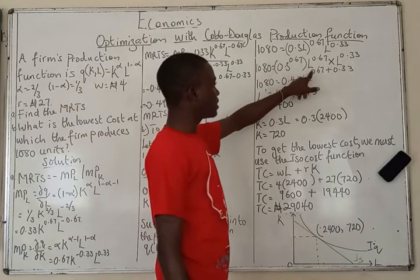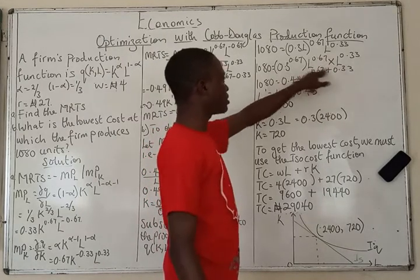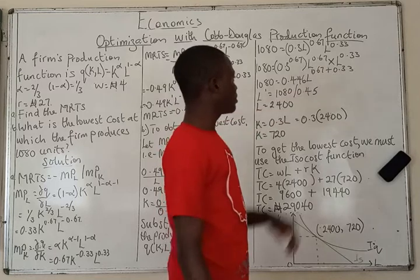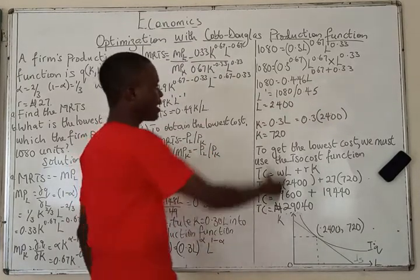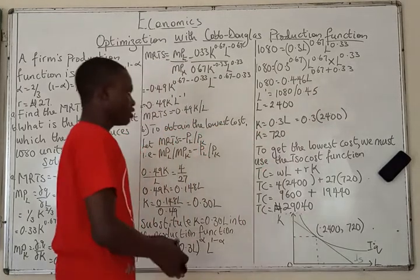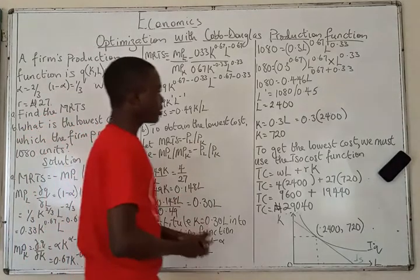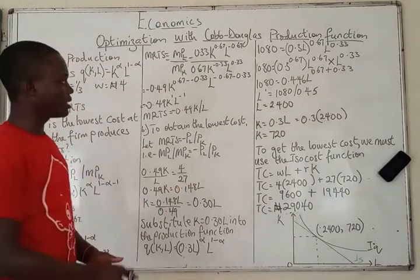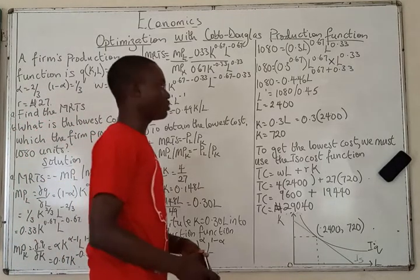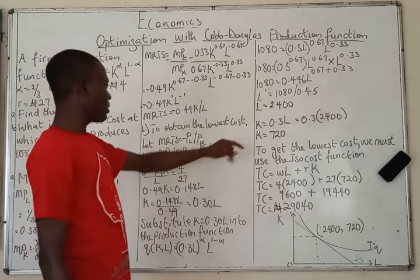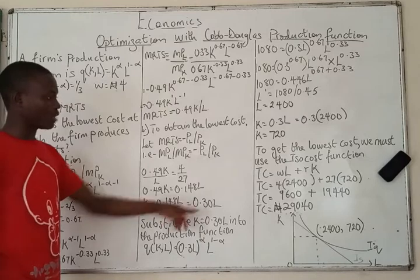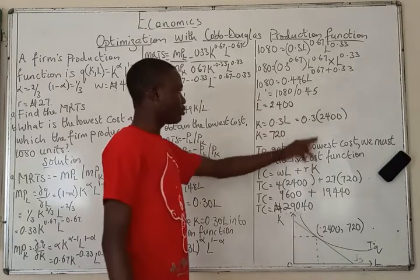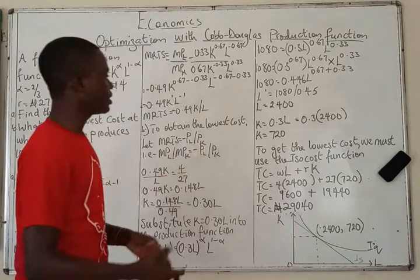Dividing 1,080 by 0.45 gives us L = 2,400 units of labor. Then substituting L = 2,400 back into K = 0.3L gives K = 0.3 times 2,400 = 720 units of capital. These are the cost-minimizing input quantities.